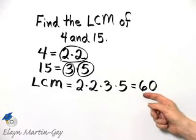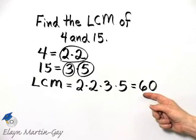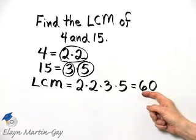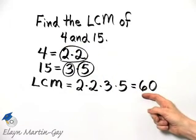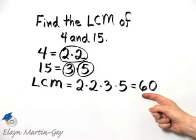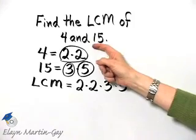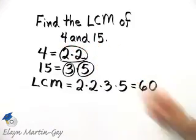Now make sure you understand what least common multiple means. It means 60 is a multiple of 15 and also a multiple of 4, and it's the smallest number that is a multiple of both of these numbers.